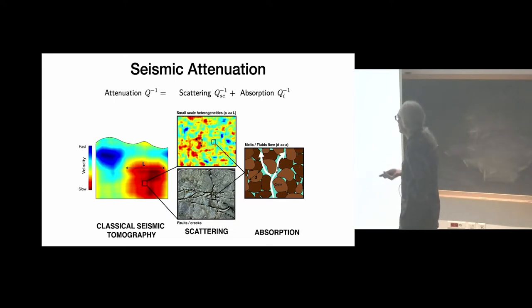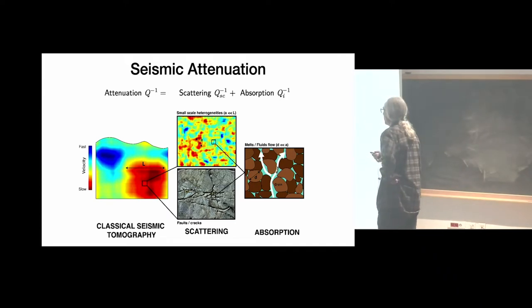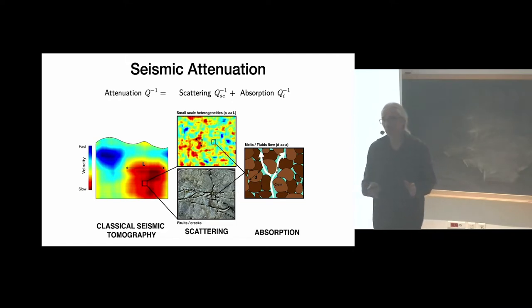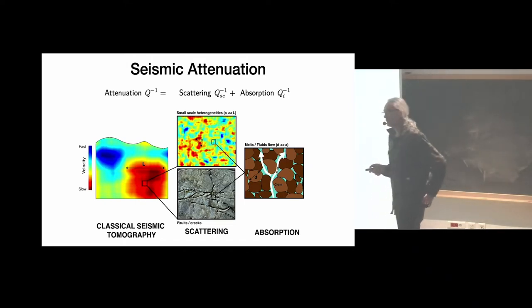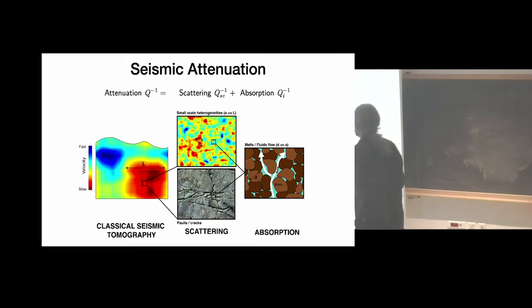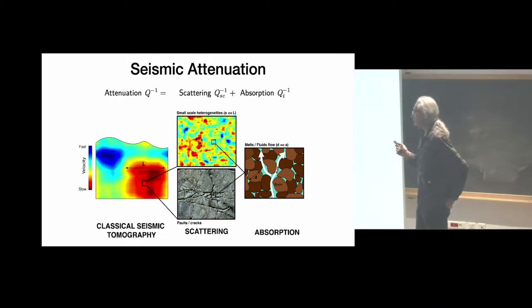There is another very important attenuation mechanism I call absorption, which covers many different types of phenomena. Probably the most important process for planetary science is absorption due to the presence of fluids inside the porosity. You might say there is no fluid on the Moon — certainly no free water. But there were very important experiments done in the framework of the Apollo mission by a scientist called Tittman.